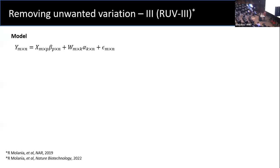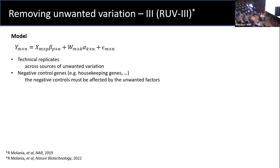You have X beta plus W alpha. To reach W alpha, which is the unwanted variation term, we need two main components: technical replicates to get alpha, which is going to be gene-wise specific, and we need the negative control genes — genes that are not affected by your biological factor of interest but must be affected by unwanted variation. Technical replicates are the same samples put in different batches.